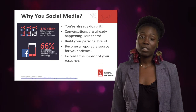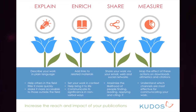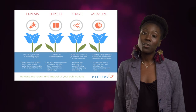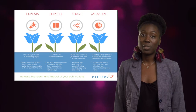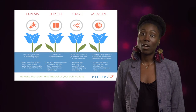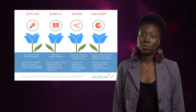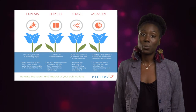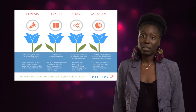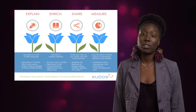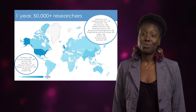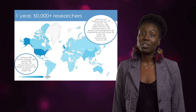Increase the impact of your research. As a benefit to our members, ASM has partnered with the online software Kudos. Kudos lets you find your research papers and further explain them by adding links and talking more about your research details. You can share those papers using Facebook and Twitter, and then you can measure the impact of your research and see how many retweets and shares you've gotten. There are already over 50,000 researchers on the Kudos platform.